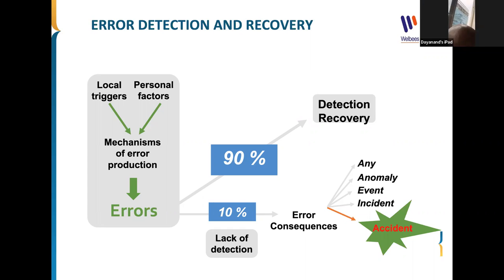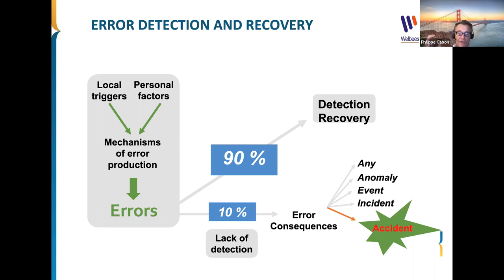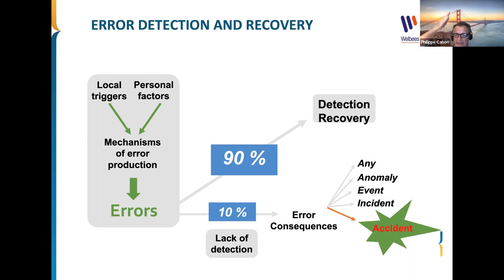The perspective on the 80/20 formula is that we can't really say there are clear distinctions between purely human factors and other kinds of causes. It's very difficult to say there is a strict boundary. So we don't really believe we can say that 80 percent of accidents are due to human errors. It has no sense, because it's always a combination of human, organizational, and technical problems.